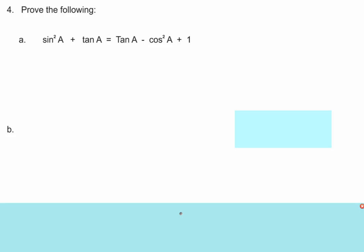Looking at this first identity problem, there are a lot of different ways you can go — you can convert stuff, move stuff, it is an equation so you can add stuff, deal with fractions. I see the tangent A is on both sides, so I can add negative tangent A to both sides and it's gone. Then I add a positive cosine squared to both sides, and that's the Pythagorean identity.